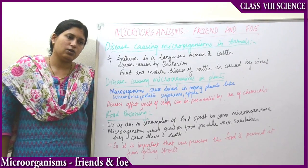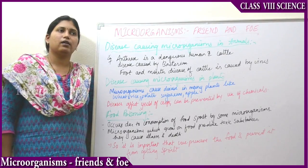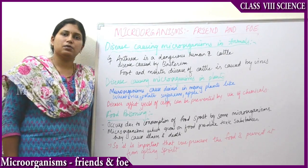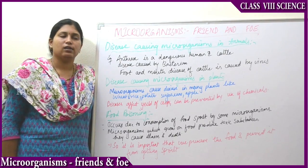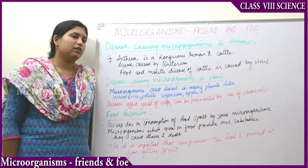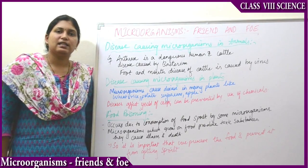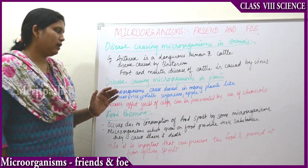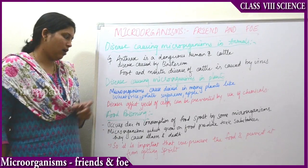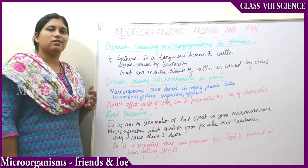In plants also we get many diseases. Leaves of the plants will be affected, stems will be affected, the color of the plants will change, and there may be withering of the leaves. These diseases occur due to harmful microorganisms.